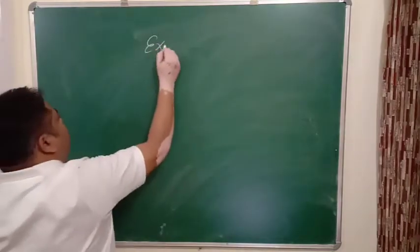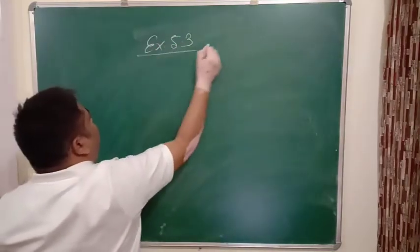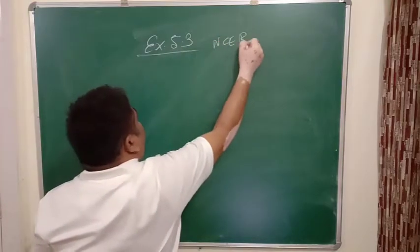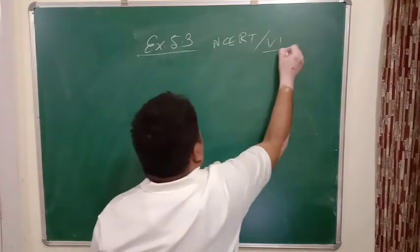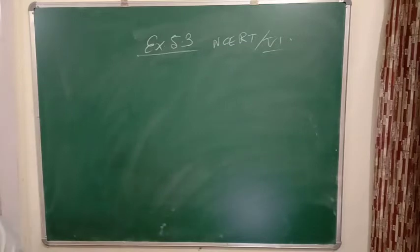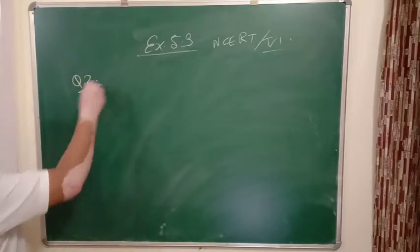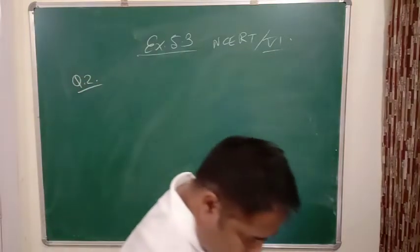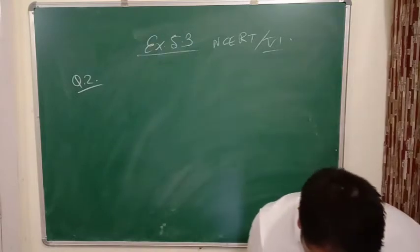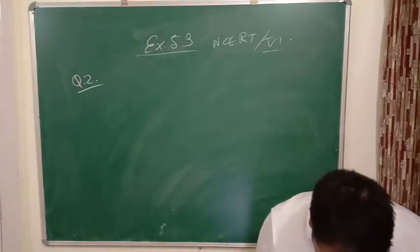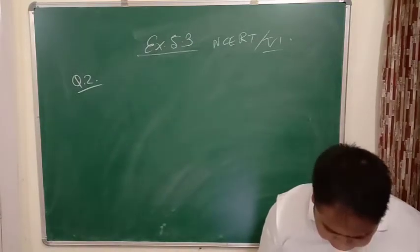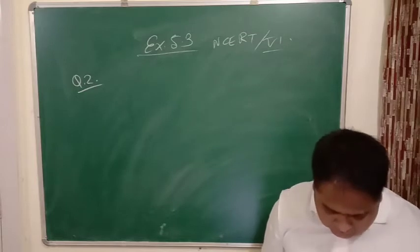Now we will do the next question. Exercise 5.3 NCERT Class 6, question number 2. Classify each of the following as right angle, straight angle, acute angle, obtuse angle, or reflex angle.